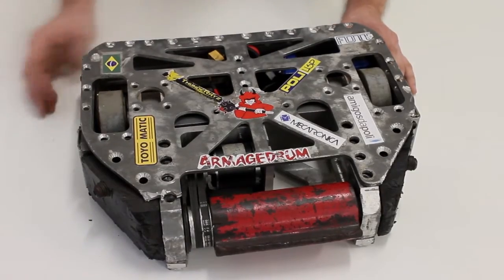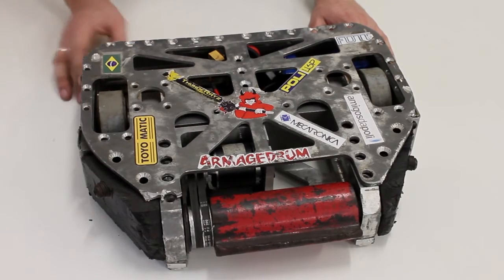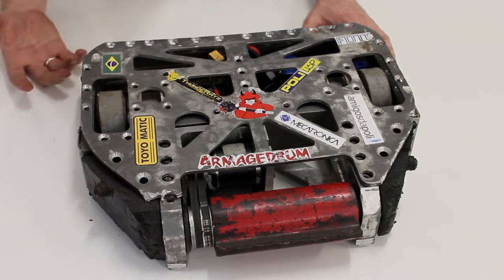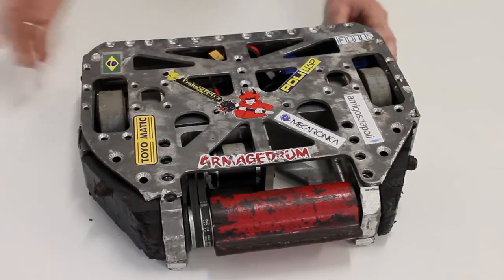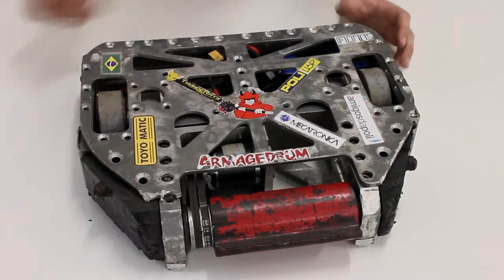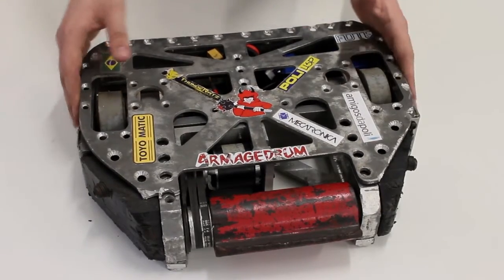Let's talk a little bit more about the Armageddon Drum from Thunderheads team. The Armageddon Drum is a robot from the featherweight category, 13.6 kg, and is the second robot of this category that the team has done in its history.